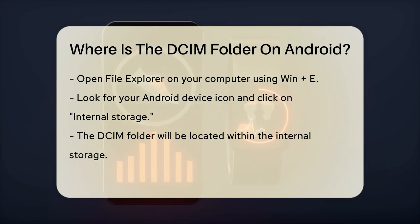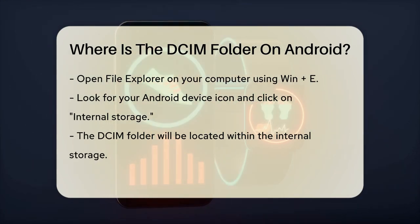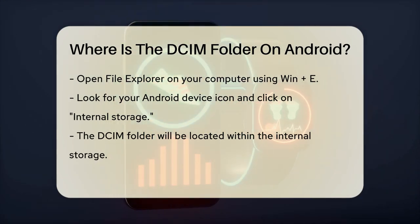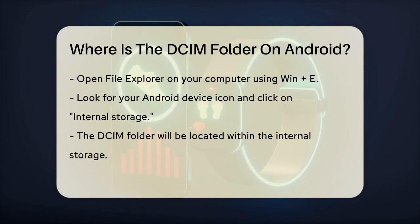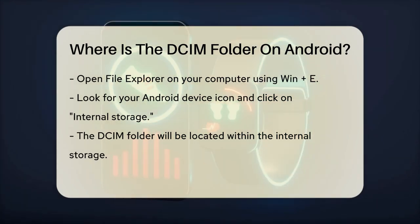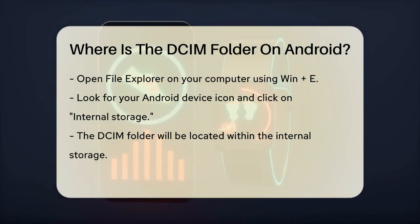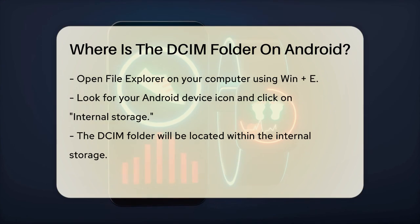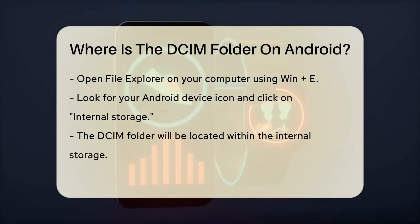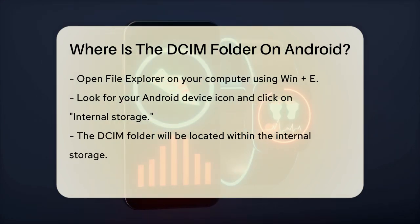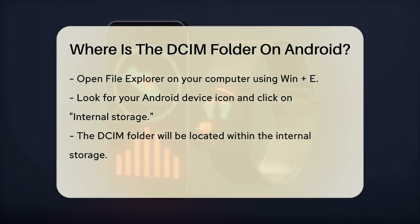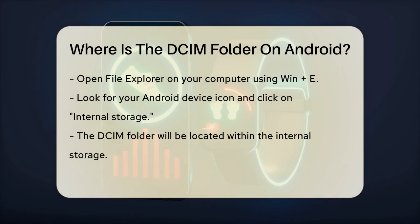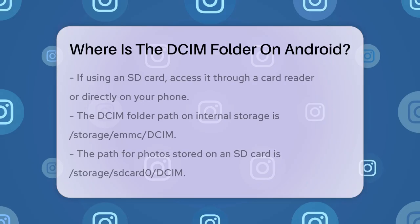If your photos are stored on an SD card, the path will be slightly different. You can either connect the SD card to your computer using a card reader, or check it directly on your phone. On your phone, the DCIM folder can be found in two possible locations. If the photos are stored on the phone's memory, the path is /storage/emmc/dcim.